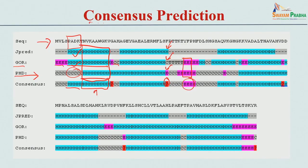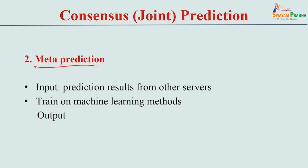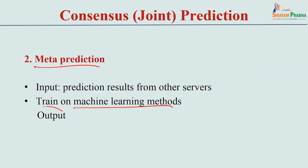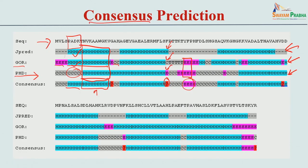This is called consensus, joint prediction, or ensemble-based method. The second type is meta-prediction: take a sequence, predict secondary structures using individual methods, then use this information as input to train a machine learning model to get the desired output. The model considers these situations and tries to maximize results using experimental data as ground truth. Meta-predictions usually work better than any individual method reported in the literature.